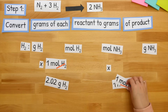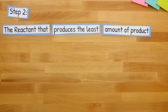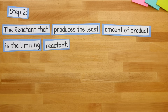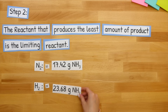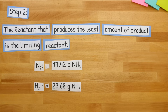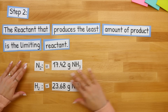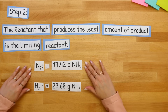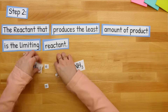Now let's move on to step two, which is our last step. The reactant that produces the least amount of product is the limiting reactant. Let's compare our reactants: N2 produced 17.42 grams of NH3, and H2 produced 23.68 grams of NH3. So N2 produced the least amount of product. Therefore, N2 is our limiting reactant.